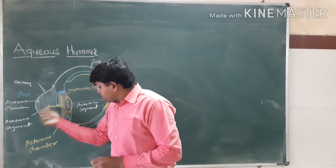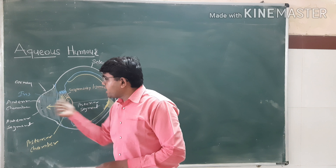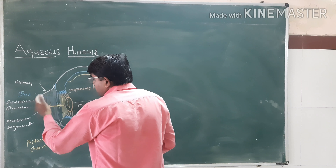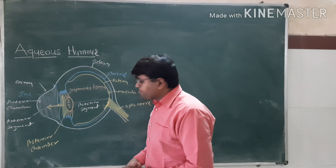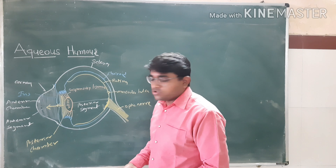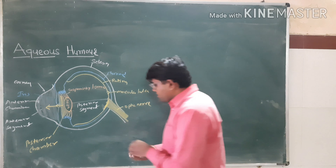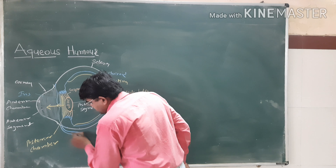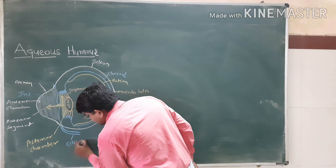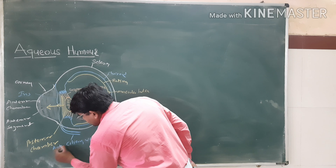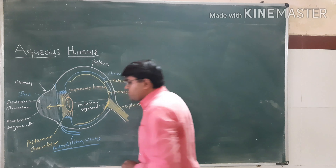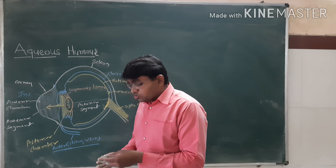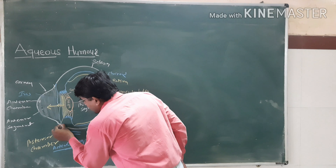Through the pupil there is free movement of the aqueous humor between the anterior and posterior chambers. Then the aqueous humor is drained from the anterior chamber by the anterior ciliary veins. The anterior ciliary veins are present here in relation to the ciliary body. These anterior ciliary veins open into the anterior chamber through a canal, and this canal is known as the Canal of Schlemm.